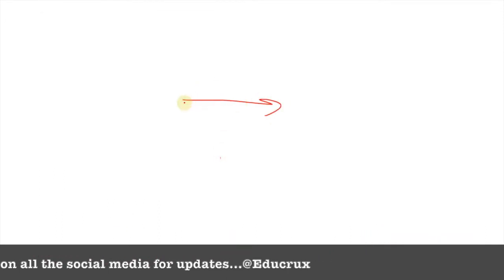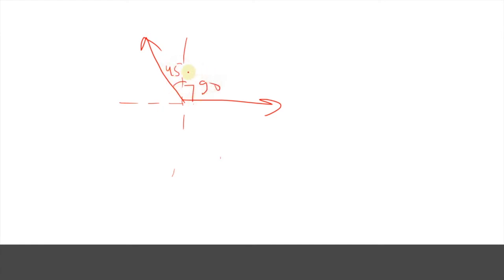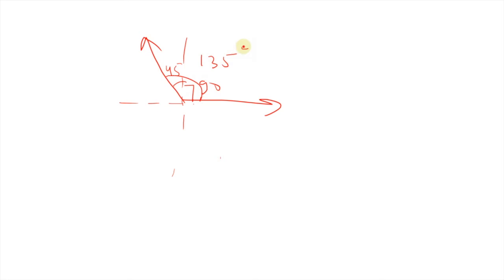This is 45 degrees and this is 90, so total is 135 degrees. And when you're going from r to F, you're going in anticlockwise direction, so definitely the angle is taken as positive.